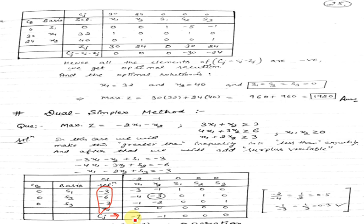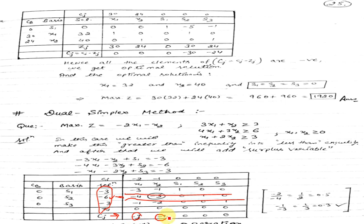Now how we will proceed: in the dual simplex method we look for the most negative value in the solution column. Which is most negative — minus six or minus three? Minus six. So we select the most negative value. This will be our key row: the row with minus six. In the simplex method we select the key column; here in the dual simplex we select the key row.